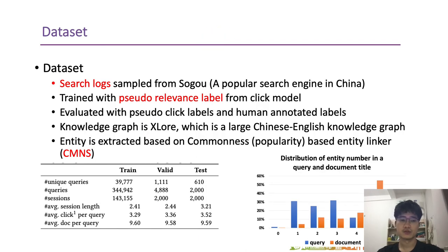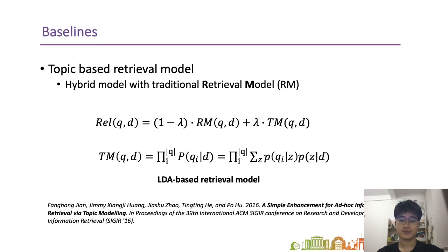We conduct experiments on search log samples from a popular search engine in China. Since we have a lot of training data, we train with pseudo-relevance labels from click models, and evaluate with both pseudo-relevance labels and human annotated labels. For the knowledge graph, we use XLore, which is a large-scale Chinese-English knowledge graph, and entities are extracted by a commonness-based entity linker. Since our model uses additional topic information, we also construct a baseline using a linear function to combine the LDA-based retrieval model and other retrieval models, with LDA weight as a hyperparameter tuned on the validation set.